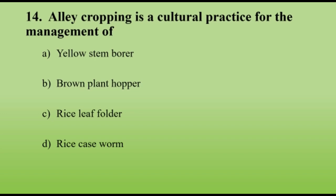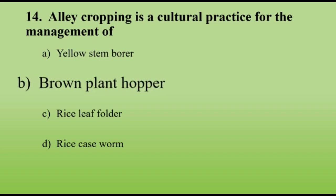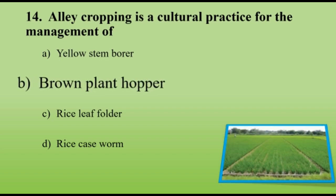Alley cropping is a cultural practice for the management of brown plant hopper. In alley cropping, after every 15 rows, one or two rows are left open, which reduces relative humidity and hence reduces the pest population.